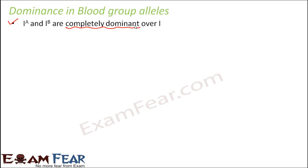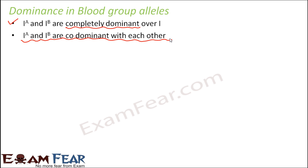Now what if a person has the genotype IAIB? Who will dominate? IA and IB are co-dominant with each other — neither dominates the other. So IA gets expressed and IB also gets expressed. As a result, the blood group would be AB. That is why we have four different blood groups in human beings: A, B, AB, and O.